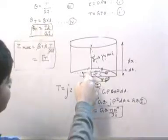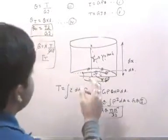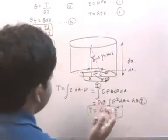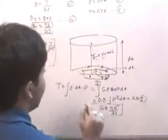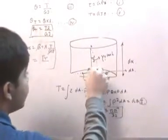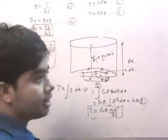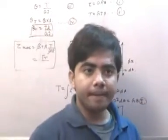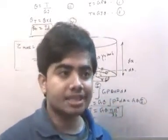So if this was my plane AB, after a torque is applied, the plane moves to AB'. This is my angle of twist.